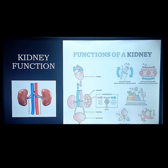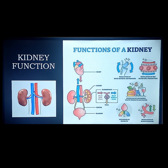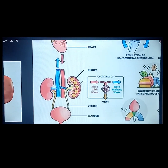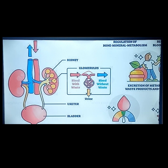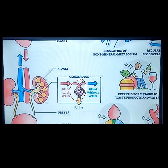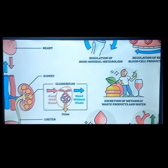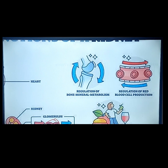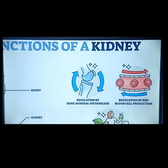The blood is filtered primarily by the kidney — that is the main function of the kidneys. From the heart, blood goes into your glomerulus. The glomerulus will filter the blood and receives blood from the afferent arterioles. One function of the kidney is the regulation of bone mineral metabolism, which is the excretion and retention of calcium depending on how many calcium the body needs.